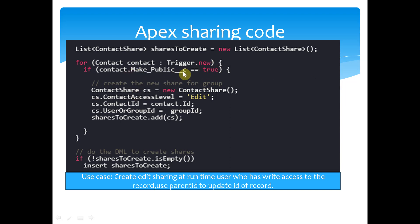Any new record which is coming in, you've created a flag called true. You're writing a trigger here and saying ContactShare — you're creating a new ContactShare, giving the access level as edit, and the contact ID of the share record is the current record's contact ID. That gets allocated, and the user or group ID is whom you want to share it with.